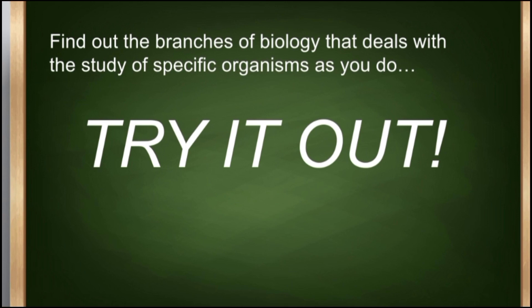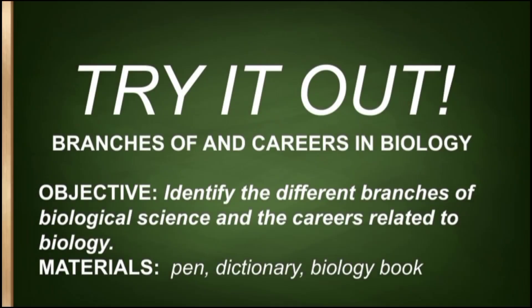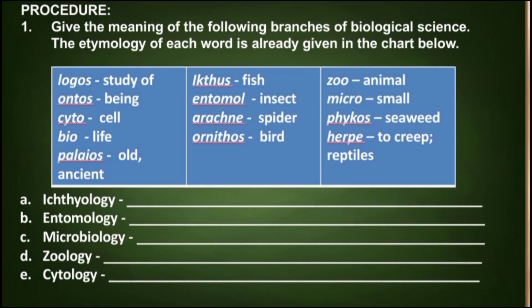Now, find out the branches of biology that deal with the study of specific organisms in the Try It Out activity: Branches of and Careers in Biology. Our objective is to identify the different branches of biological science and the careers related to biology. Materials needed are a pen, dictionary, and biology book. Procedure: give the meaning of the following branches of biological science. The etymology of each word is already written in the chart below.